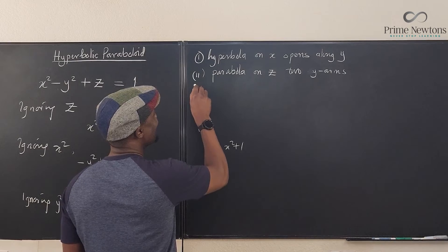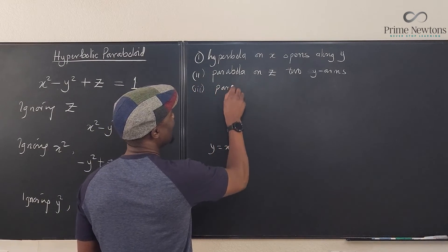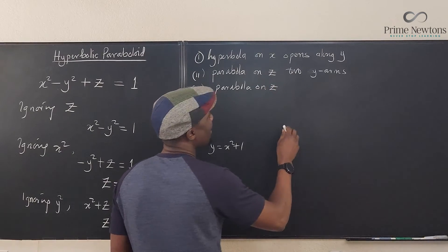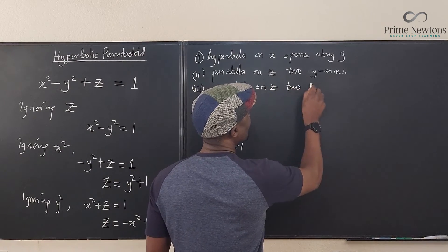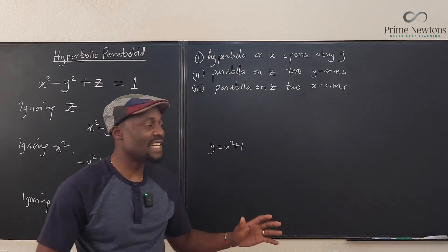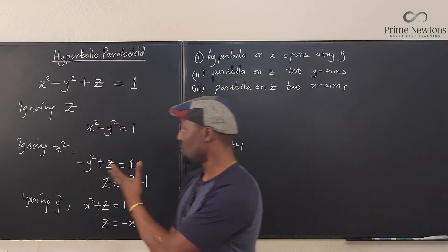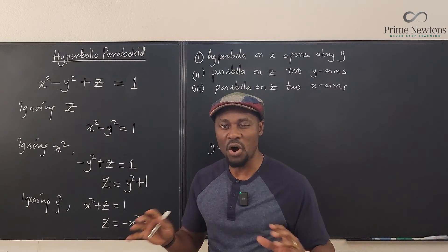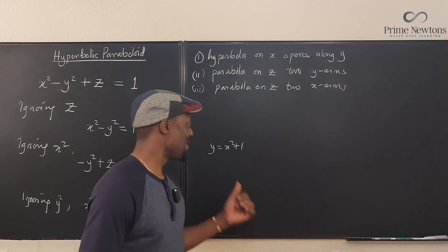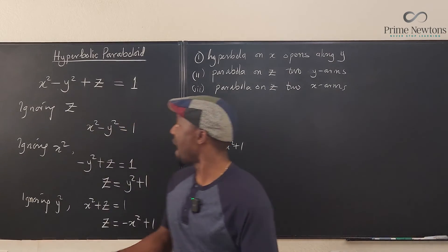And the third one is a parabola also on z and two x arms. So with this, you can easily sketch the graph or sketch the surface. It's going to be some kind of artwork you're going to be doing, but it's going to work out.